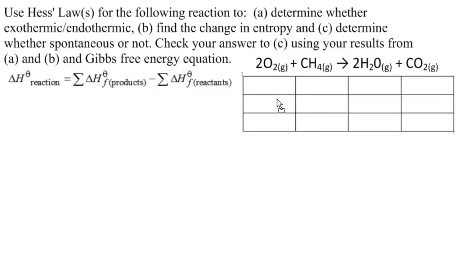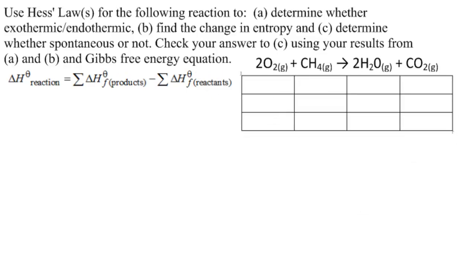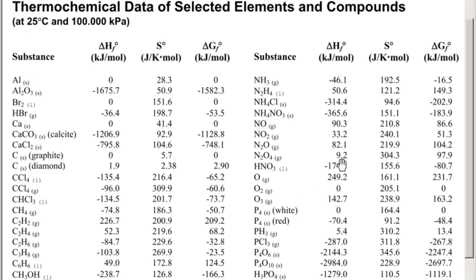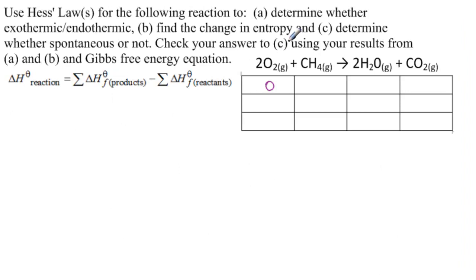Let's draw a table and get our values. The change in enthalpy for the formation of an element is always just zero, but we'll check it on our table. O2 gas: ΔHf° is 0. CH4 is minus 74.8 kilojoules per mole.